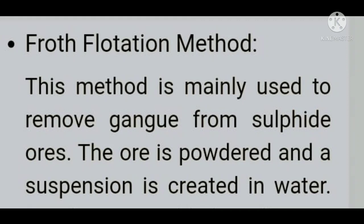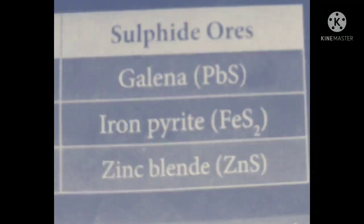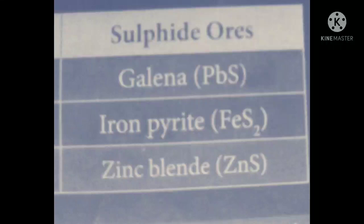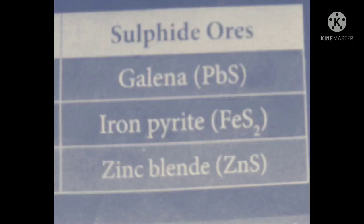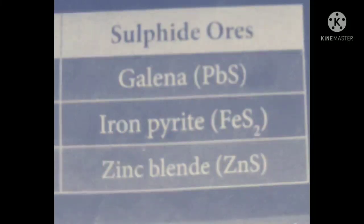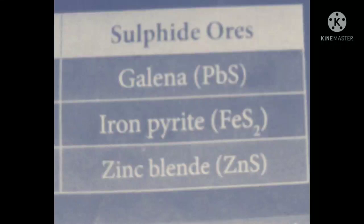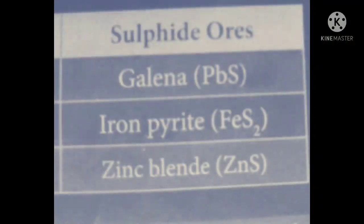Examples of sulphide ores include galena (ore of lead), iron pyrite (ore of iron), and zinc blende (ore of zinc). This technique applies only to lighter ores. Among sulphide ores, zinc blende and galena are lighter ores and can be separated by froth flotation. The principle behind froth flotation is the difference in wettability — the ore is wetted by oil, and the gangue is wetted by water.